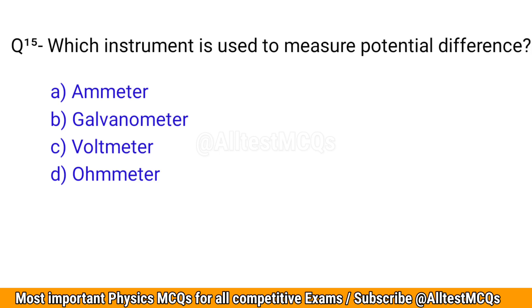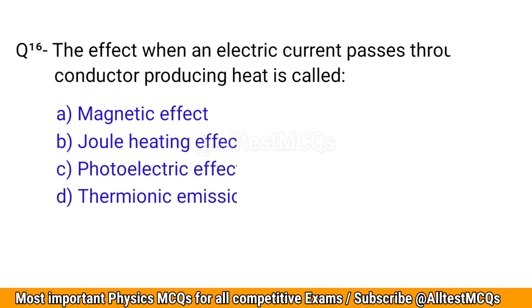Q15. Which instrument is used to measure potential difference? The correct option is C: Voltmeter.